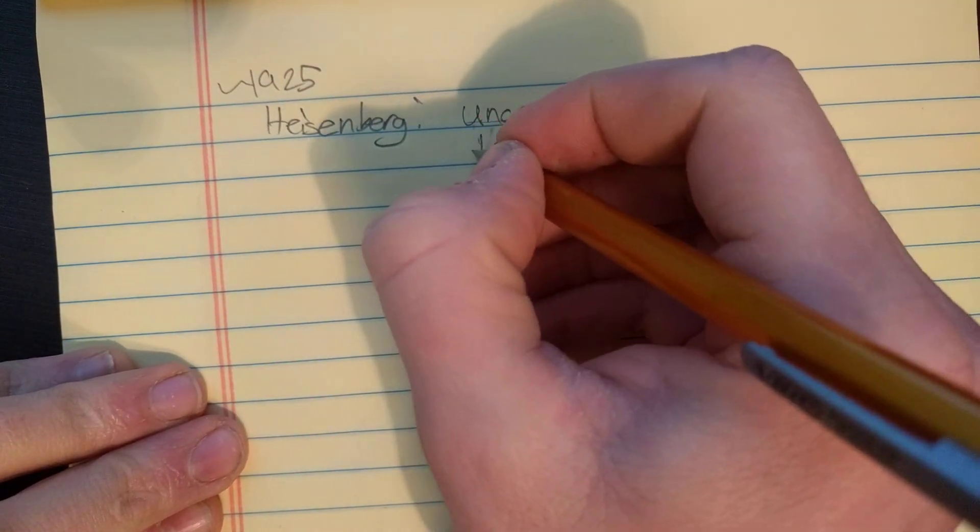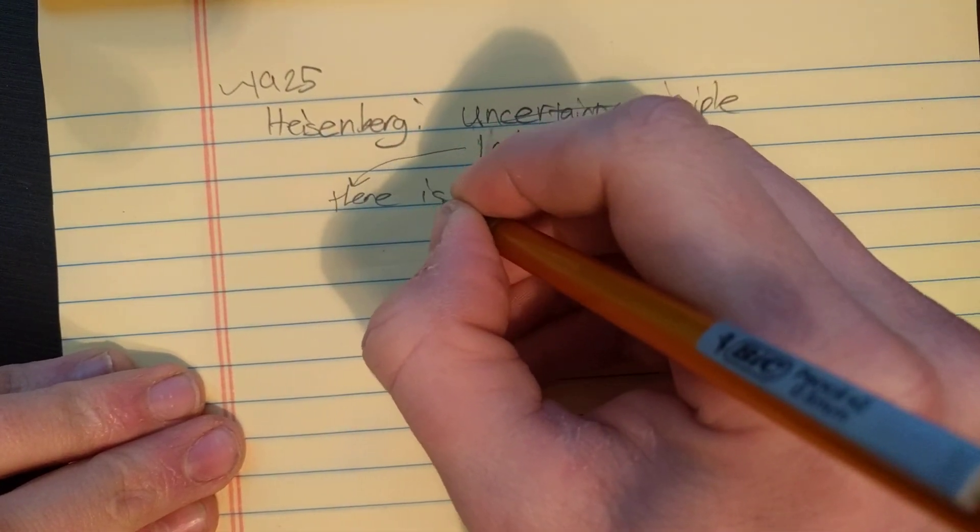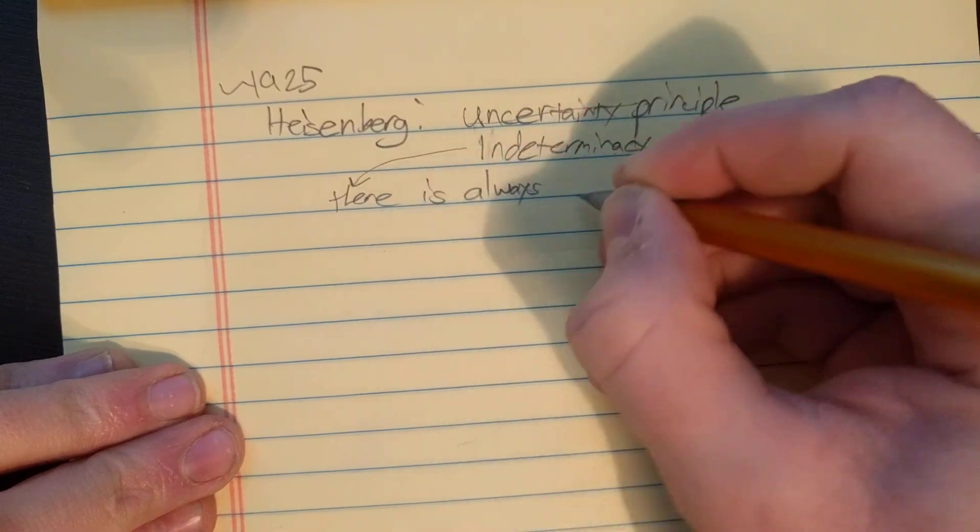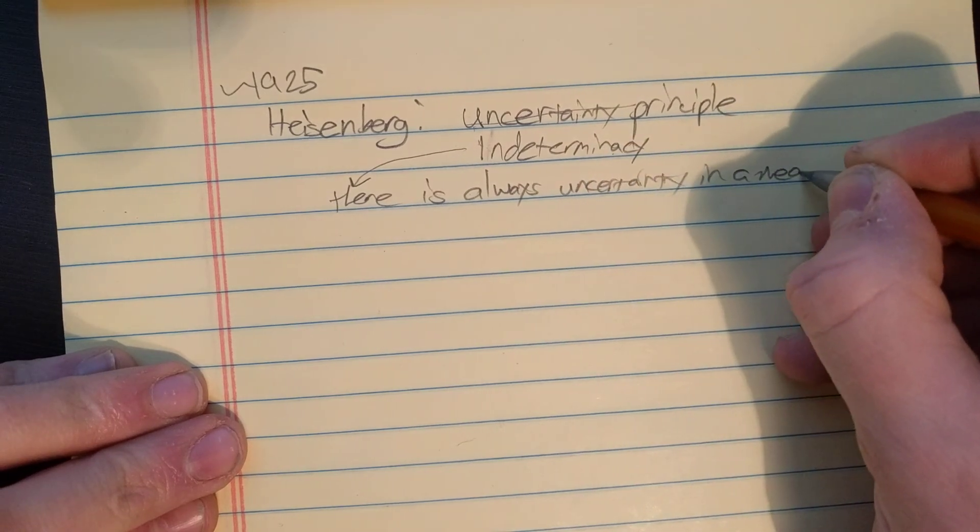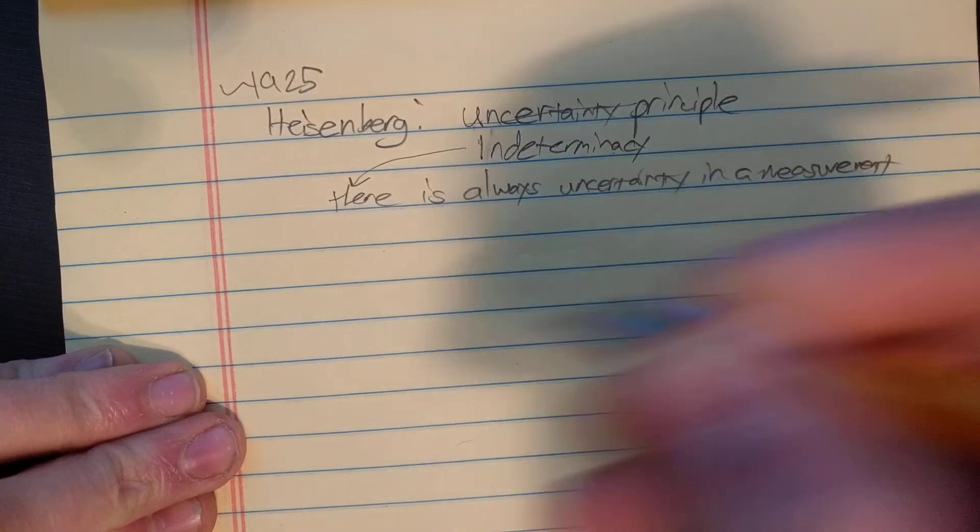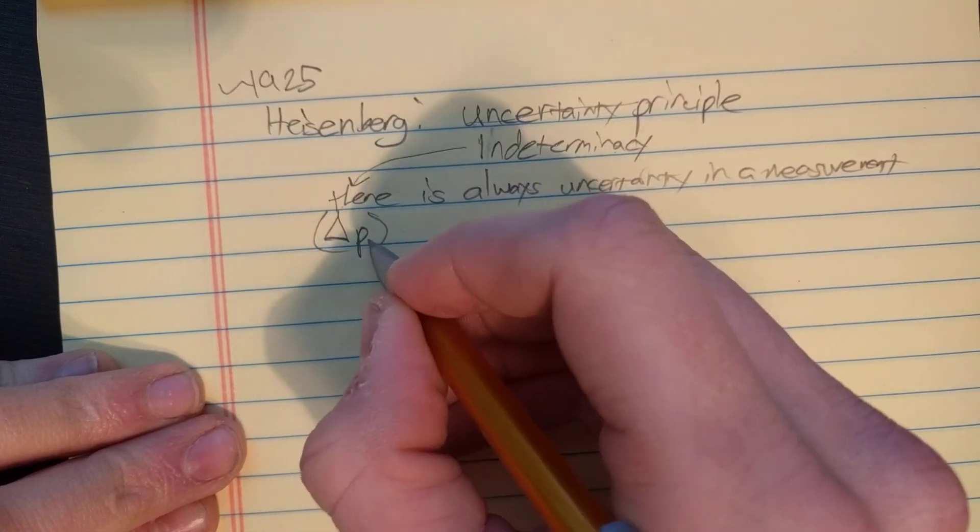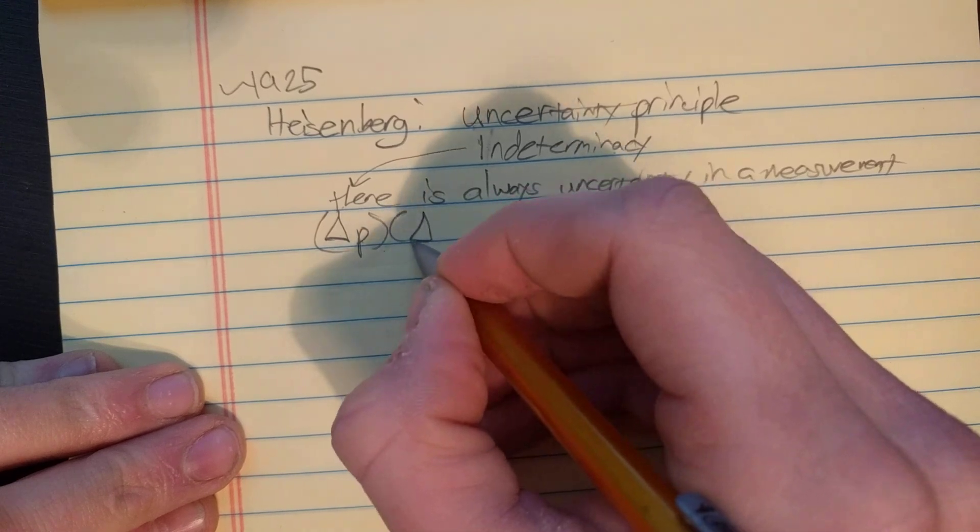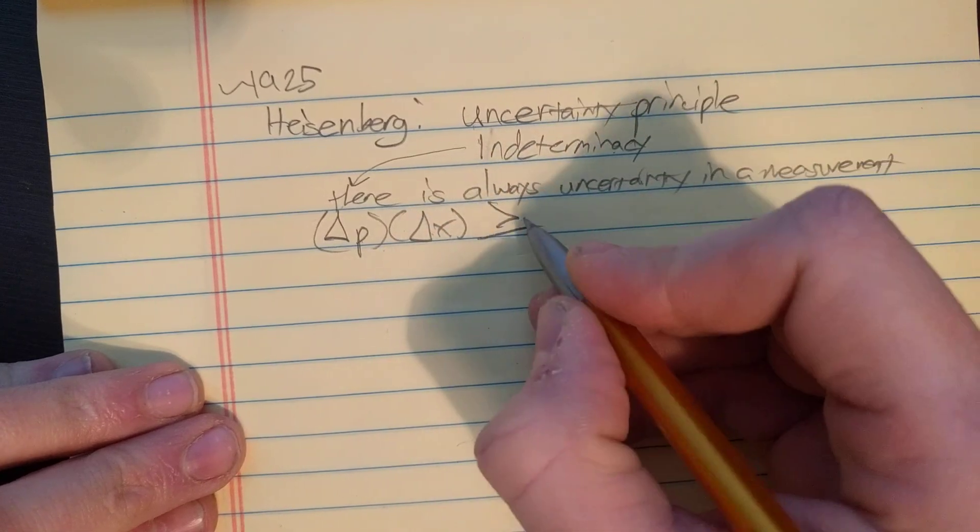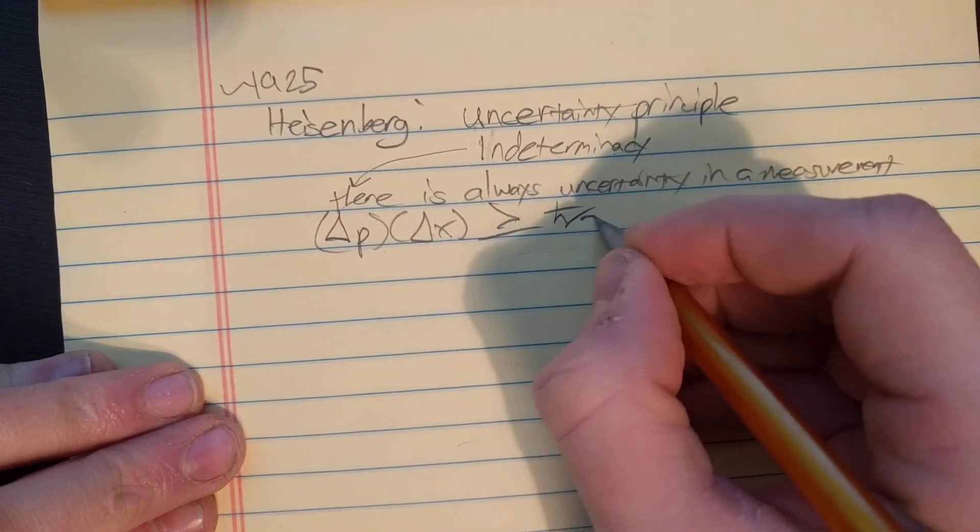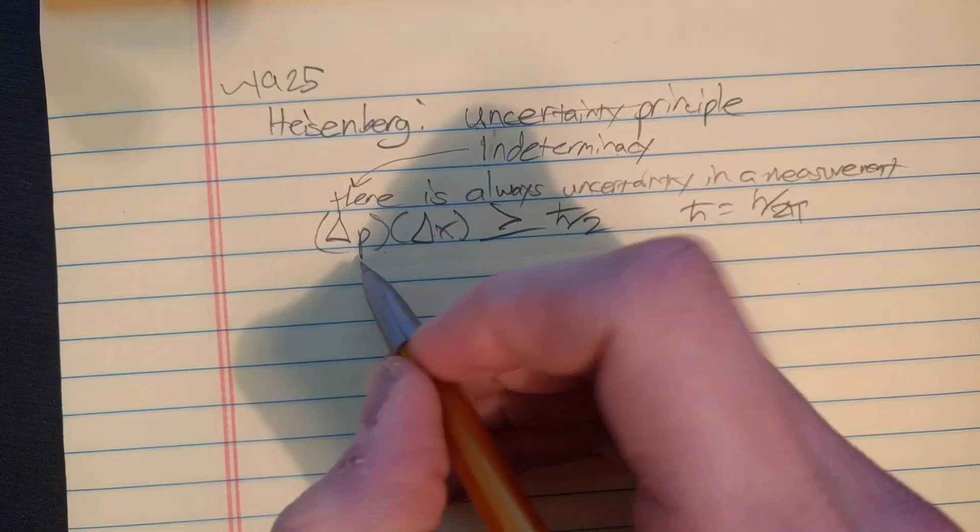What the uncertainty principle said was, there is always uncertainty in a measurement. The mathematical form of that would be the uncertainty in some variable, say the momentum, times the uncertainty in another variable, say the position, is always greater or equal to h-bar over 2, where h-bar is Planck's constant divided by 2 pi.